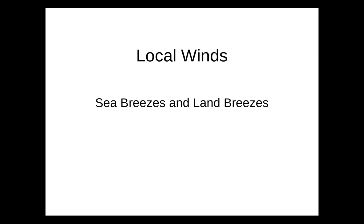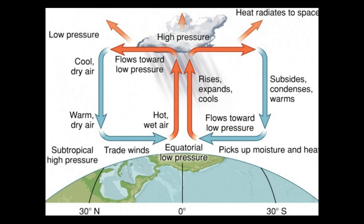Today we're going to be talking about local winds, particularly sea breezes and land breezes. In the previous lesson, we discussed large-scale winds — ones that affect the entire globe. We found that these winds are driven by the differences in pressure that result from unequal heating. They are also bent by the Coriolis effect caused by the rotation of the Earth.